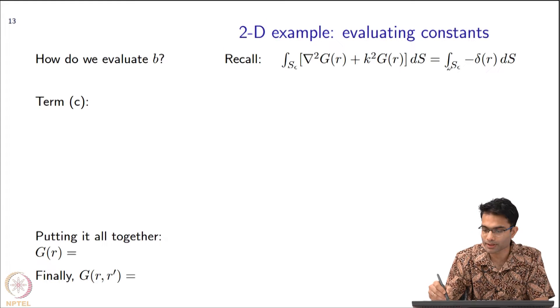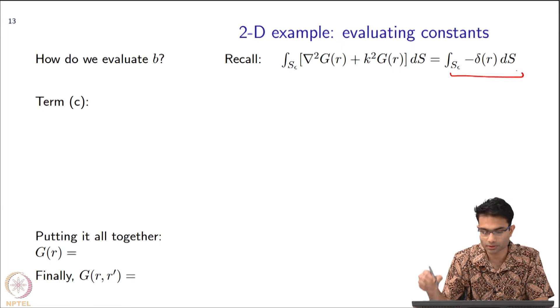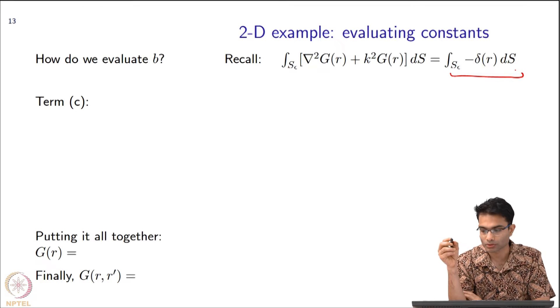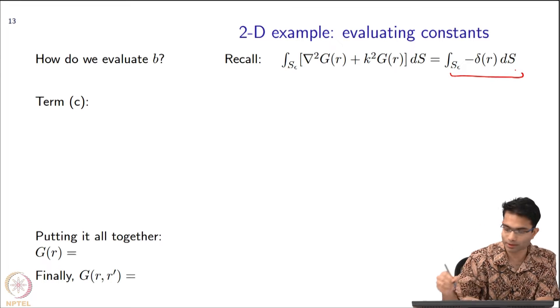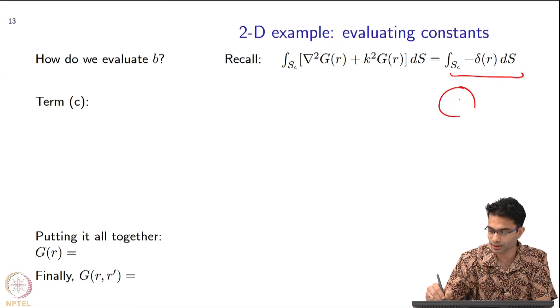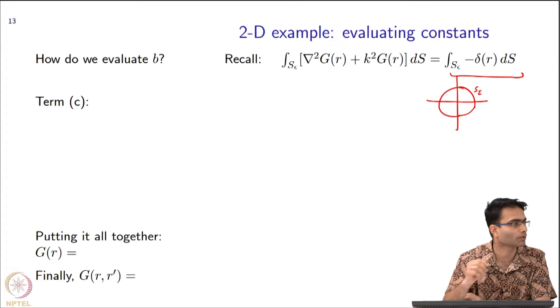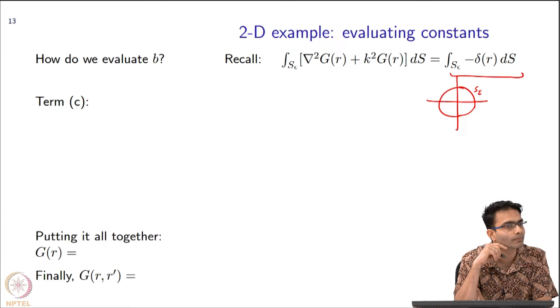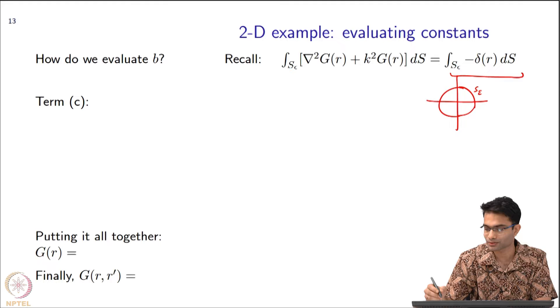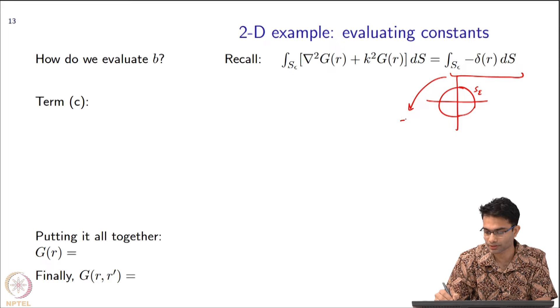The final term that remains is this term on the right-hand side. Integrating the delta function, and our integral is including the origin over here, that is my S_epsilon. What do we expect? Minus 1. This term should just give me a minus 1.